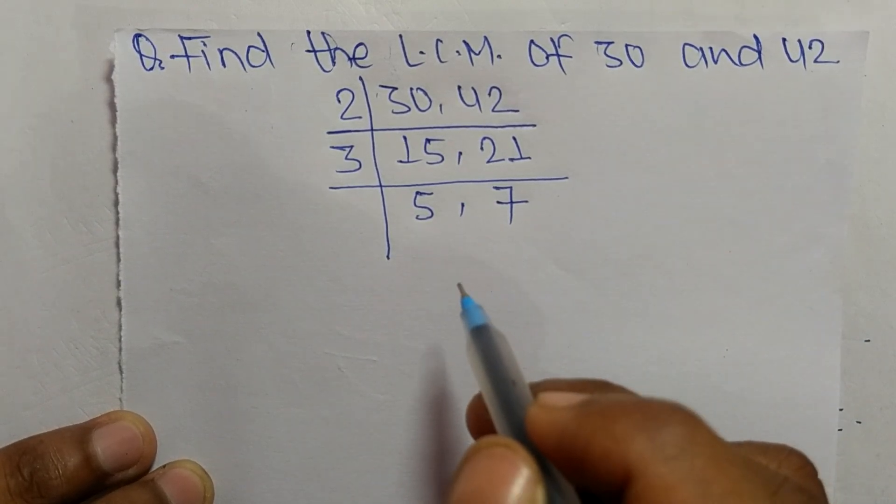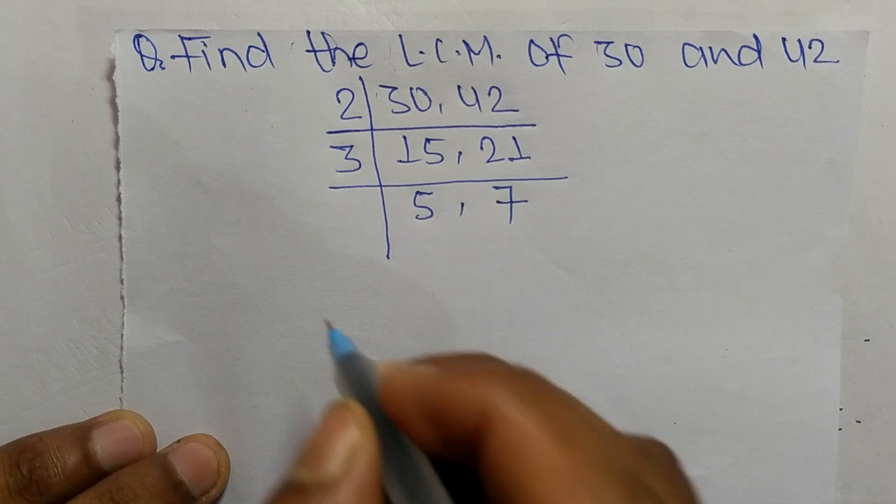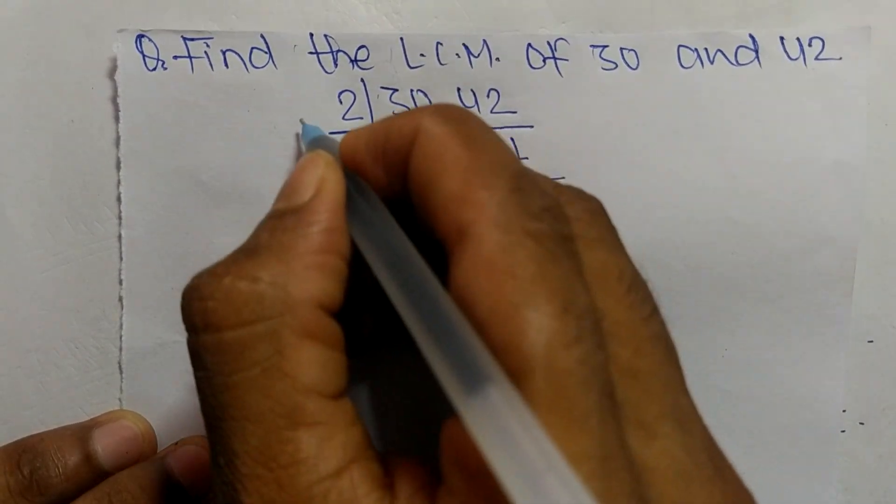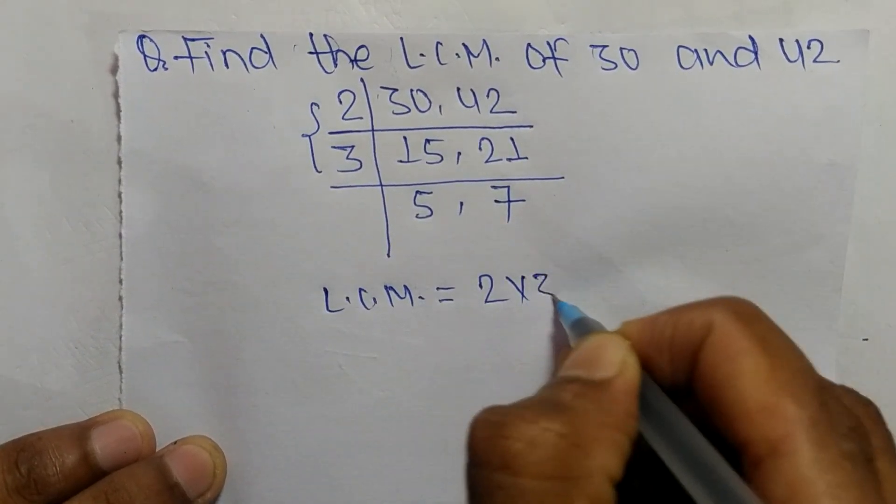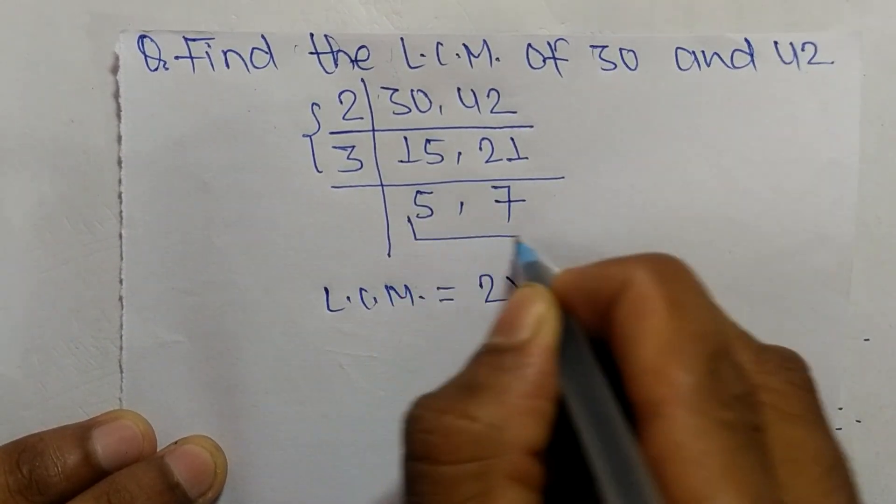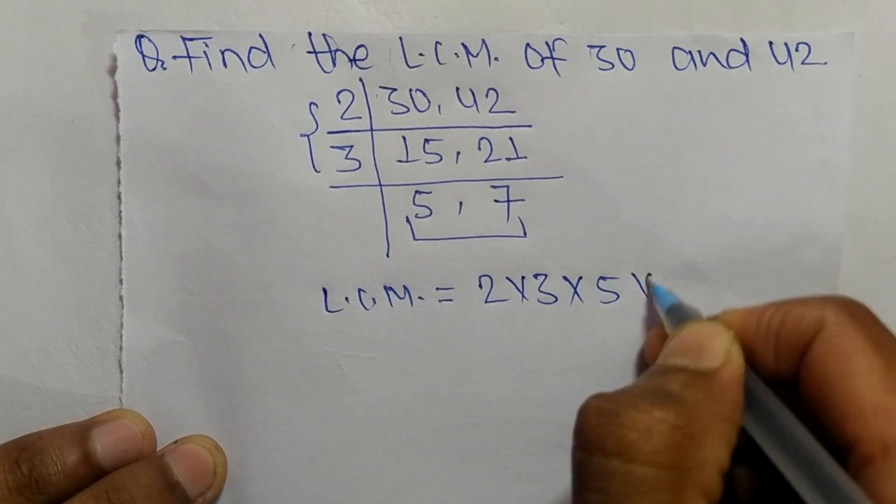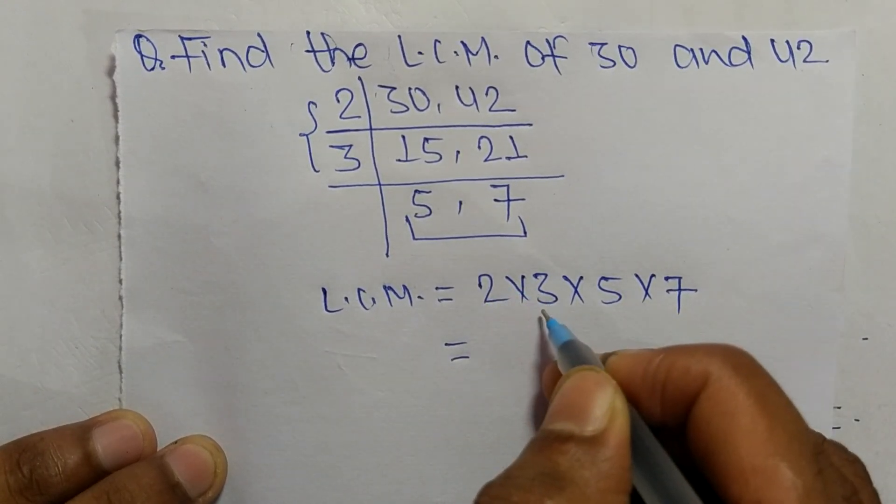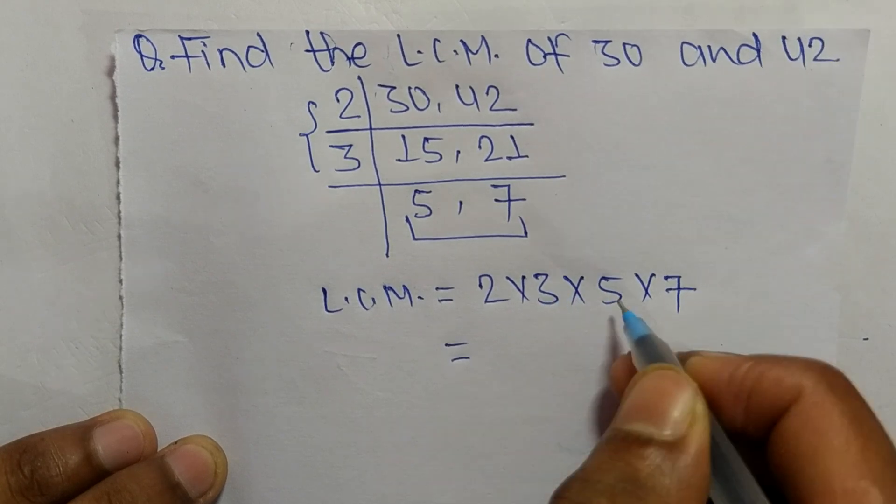So the LCM is equal to, from this part it is 2 times 3, and from this part it is 5 times 7. So 2 times 3 means 6, 6 times 5 means 30.